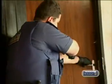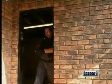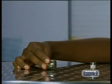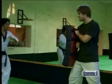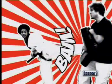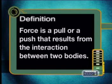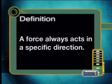What are the things that are similar in all these examples? Do you notice that there are always at least two objects or bodies interacting in each example? Do you also see that in all the examples there is either a pull in a specific direction or a push in a specific direction? Force is a pull or a push that results from the interaction between two bodies. A force always acts in a specific direction.